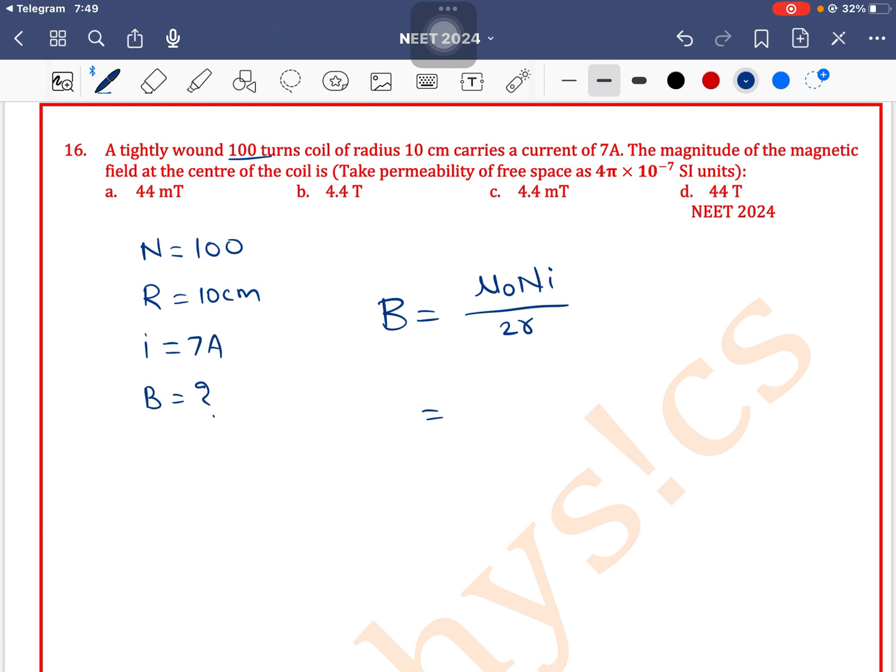Again, a formula-based question. The value for μ₀ is 4π × 10⁻⁷, number of turns are 100 means 10², current is 7, divided by 2 into R. R is 10 centimeters means 10 × 10⁻² meters. So these two cancel out.